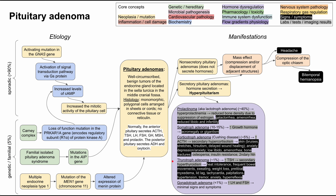A thyrotroph adenoma is when the pituitary adenoma secretes TSH, resulting in secondary hyperthyroidism. Classic symptoms of hyperthyroidism include heat intolerance, frequent bowel movements, sweating, weight loss, pre-tibial myxedema, lid lag, tachycardia, palpitations, hypertension, tremor, anxiety, and hyperreflexia.